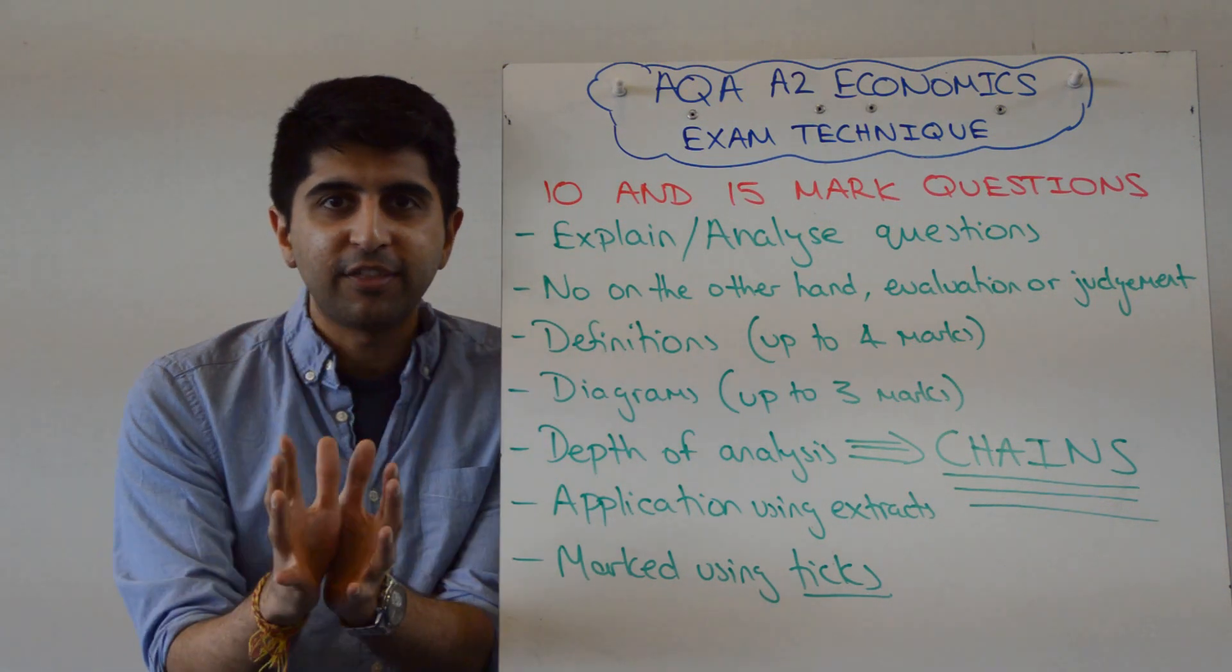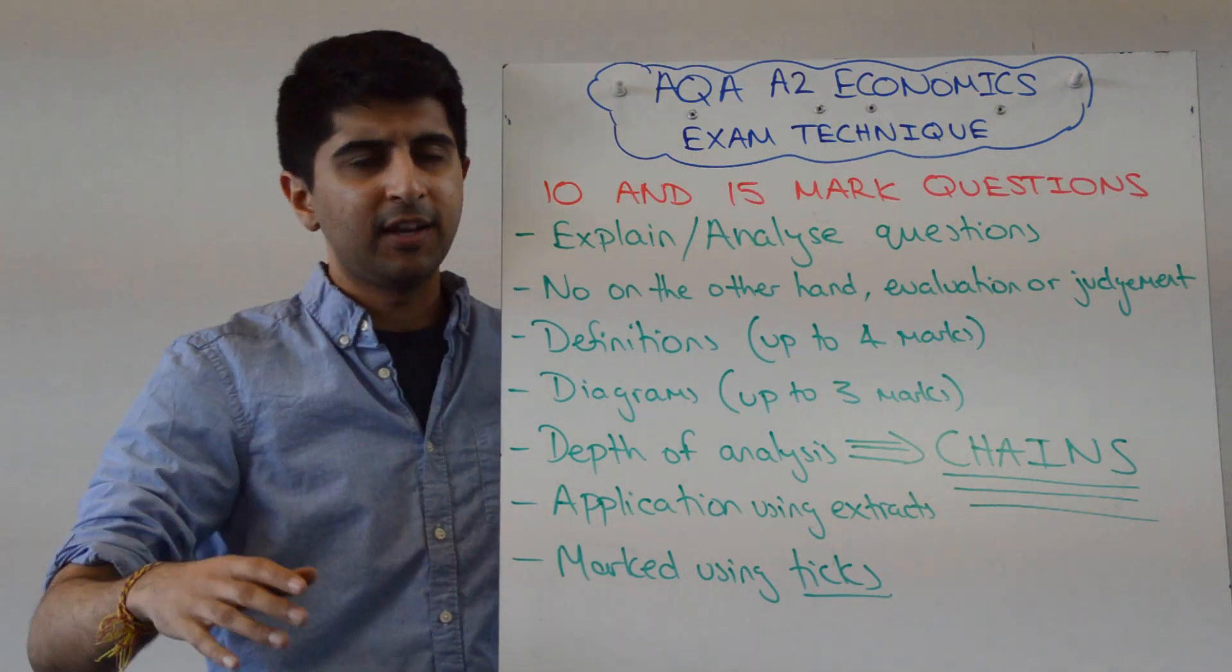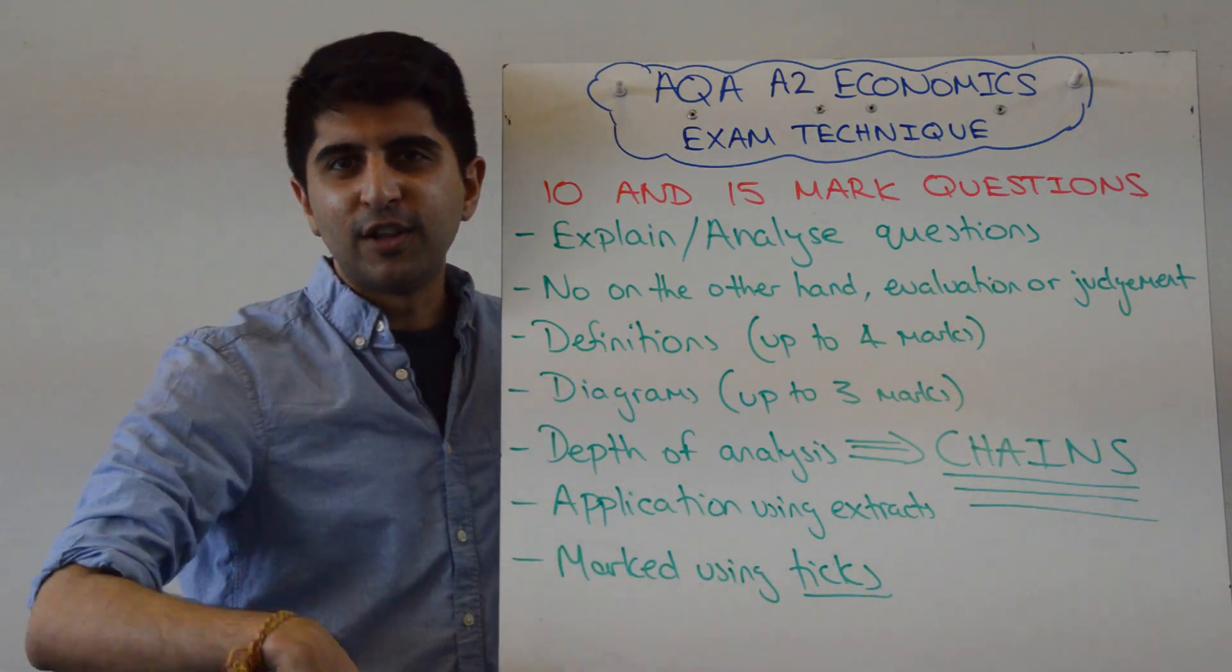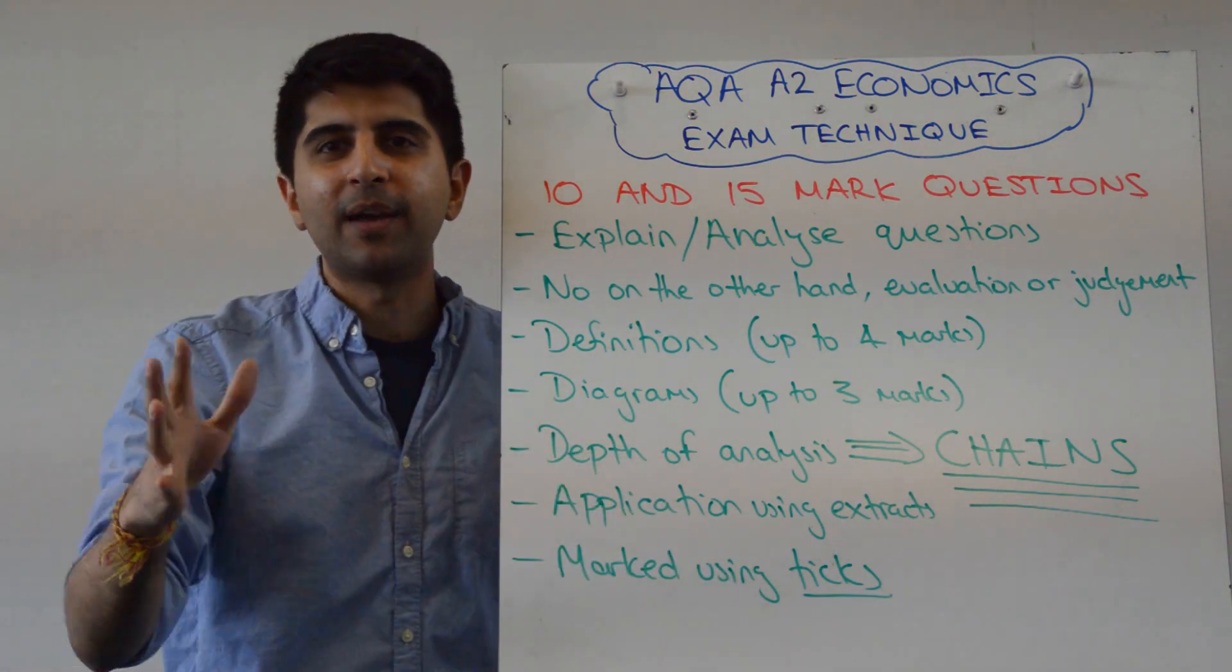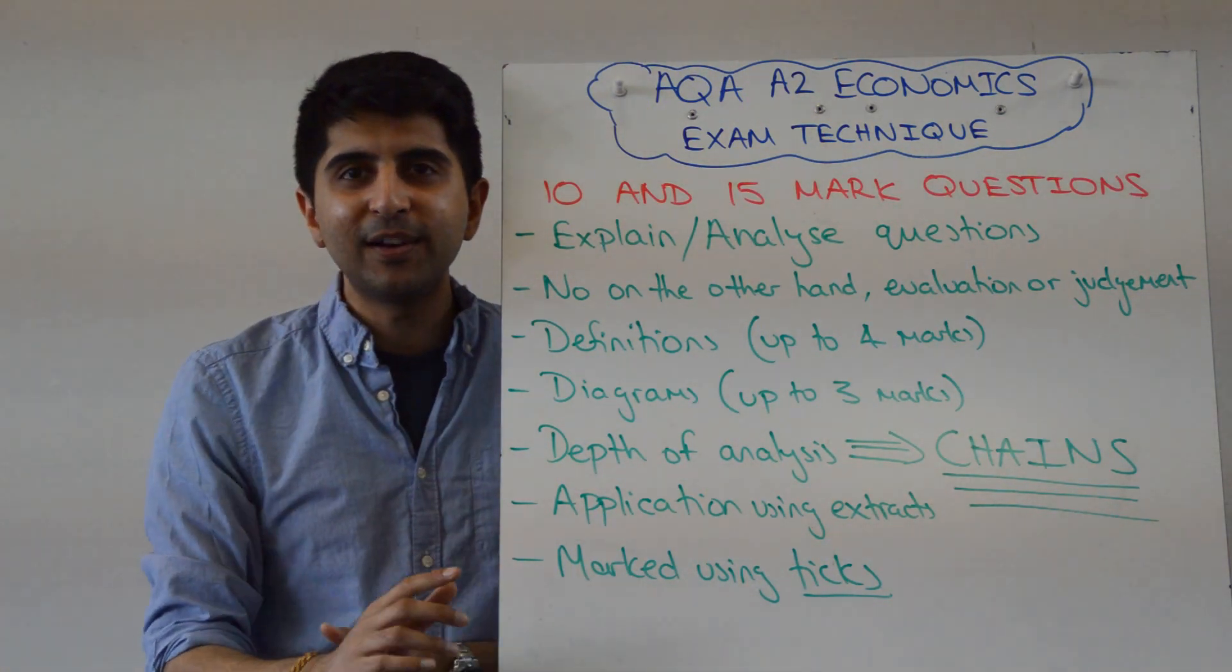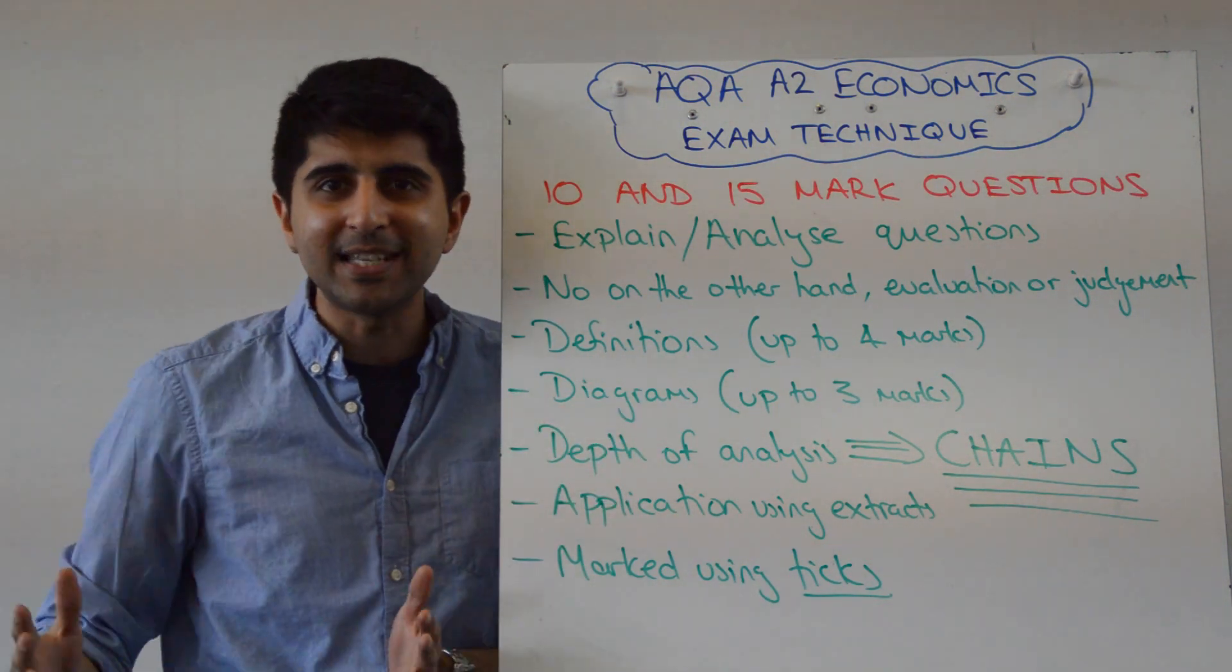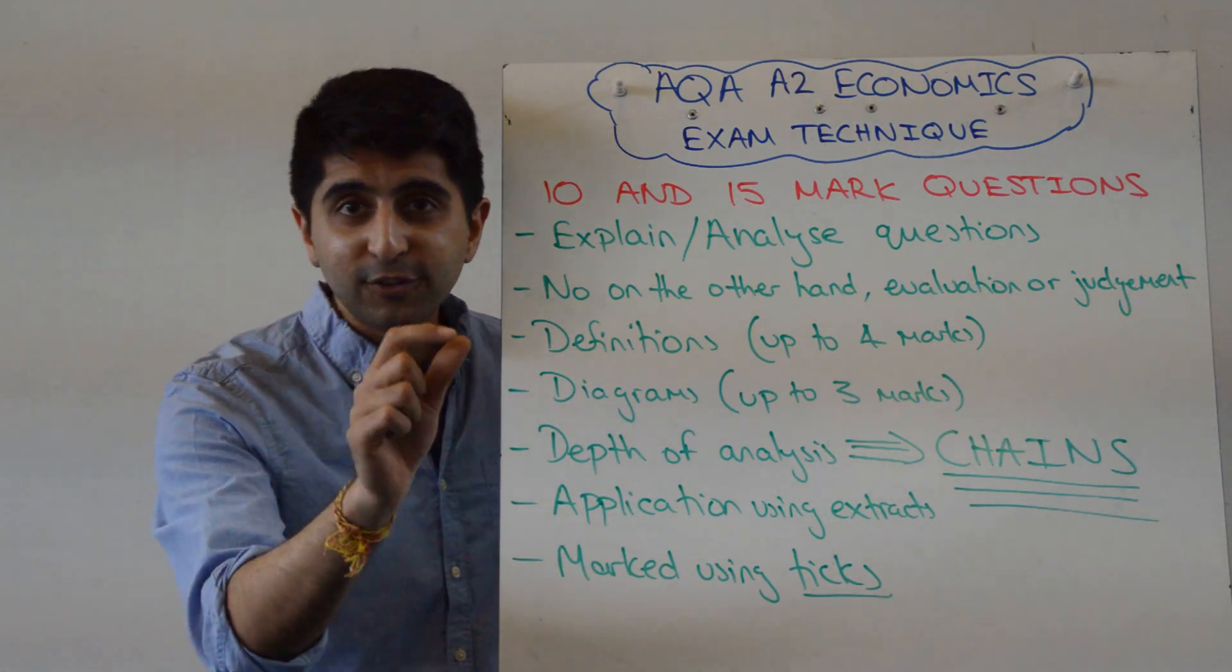Assume the examiner knows nothing. That's a great way to start. Assume the examiner is a non-economist. Maybe a French student, or an English student, or a maths student, or whatever. Knows nothing about economics. How are you going to write? Well, if that's the person marking your exam, you're going to write everything, aren't you? You're going to explain everything. You're going to take no liberties. That's what you should do. That's your chain.